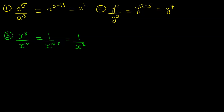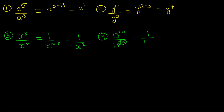One more similar example: 13 to the power of 20 over 13 to the power of 30. These are exponents, so we will not change the base. We see the bigger power is in the denominator, so first we write 1 over the base 13, and subtraction happens in the denominator — 30 minus 20 — giving us 1 over 13 to the power of 10. That is our final answer.